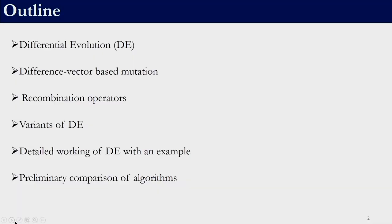This is going to be the outline of this session. First we will see what is differential evolution. Differential evolution primarily consists of two operations: one is called mutation and another one is called recombination. We will look into those operators — mutation and recombination operators. Depending upon minor variation, we have few variants of DE. We will also take the example of the sphere function and look into the detailed working of DE.